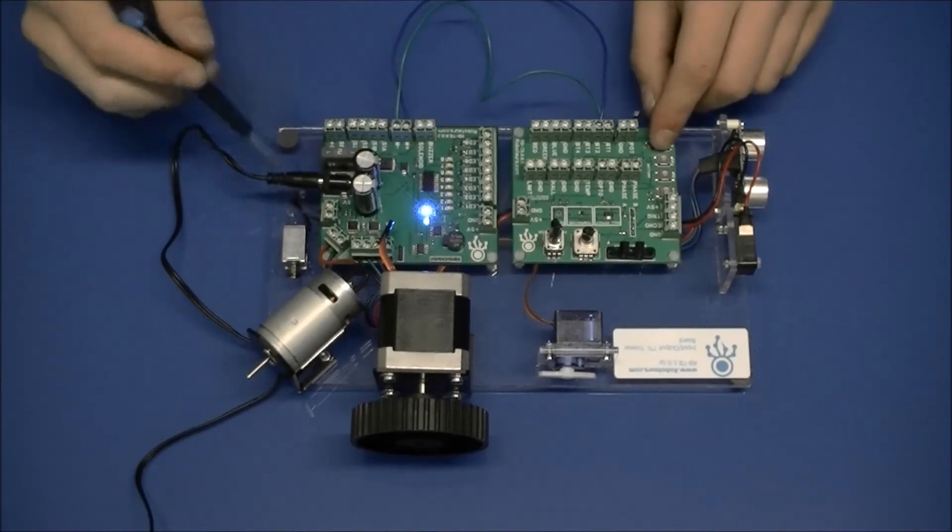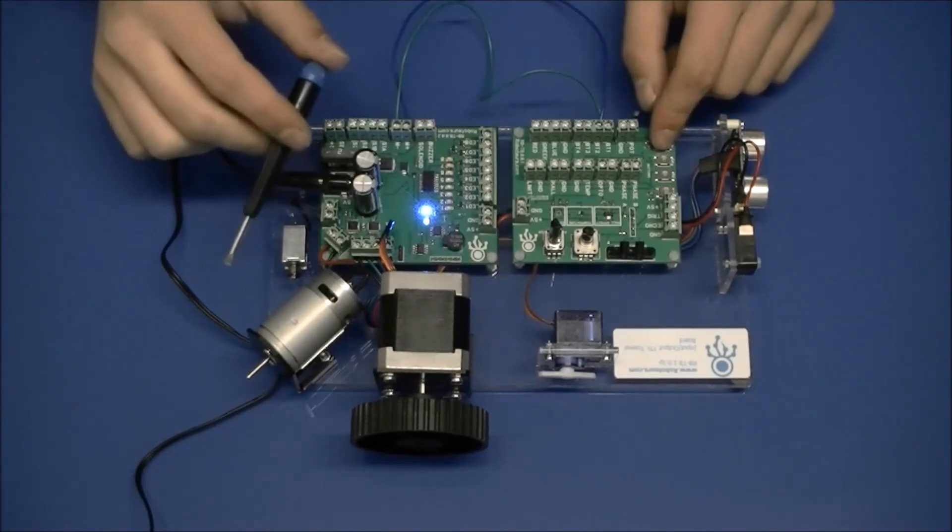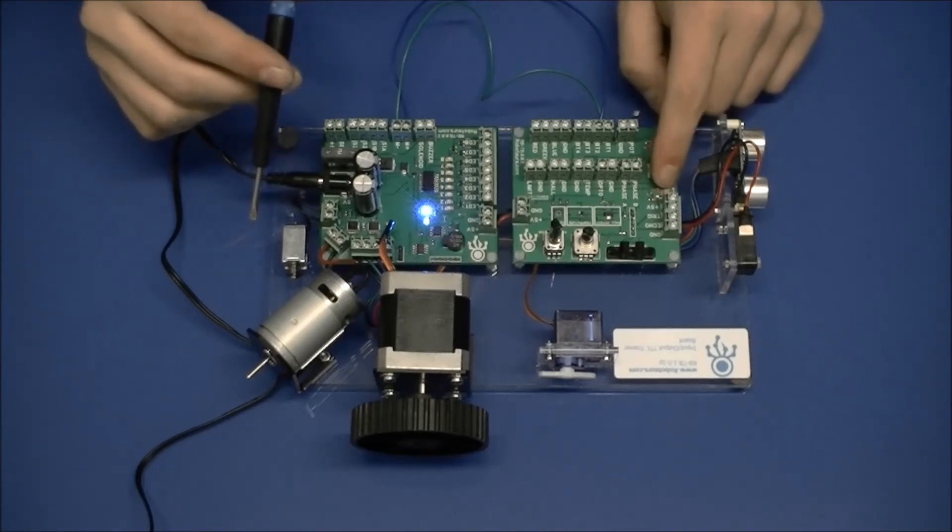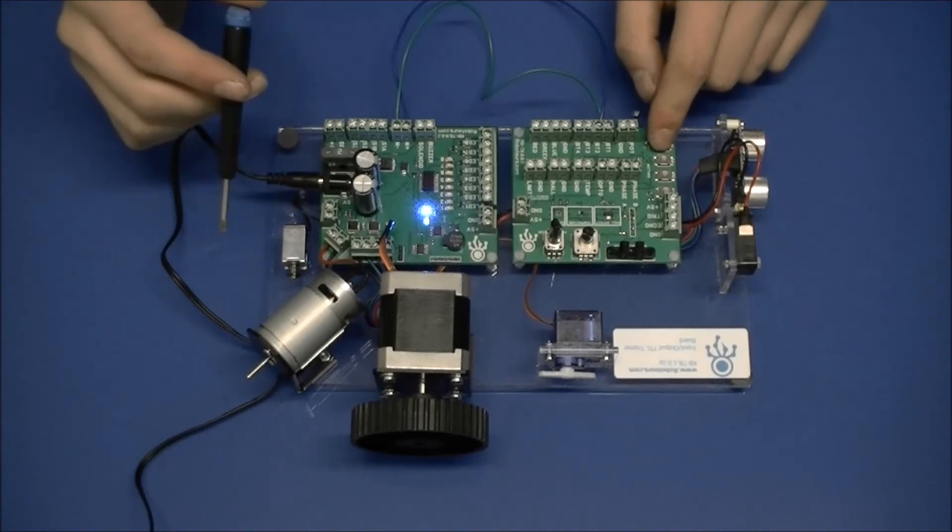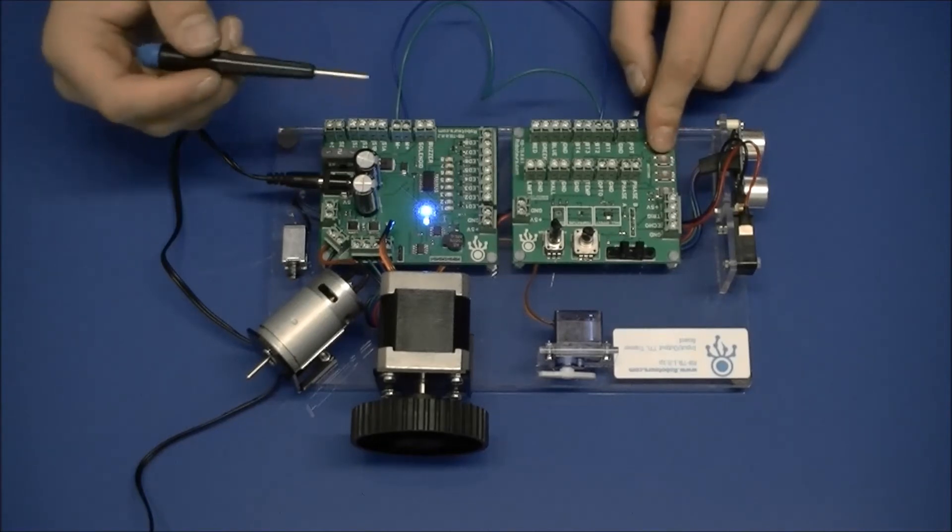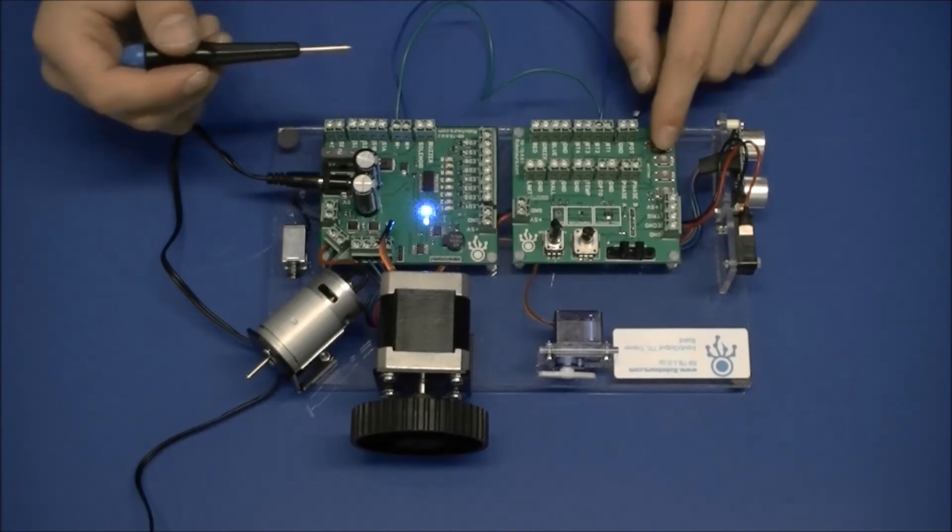So when I press the button the motor is currently spinning in one direction. Now it's spinning in the other. We can change the direction it's spinning in just by pressing the button.